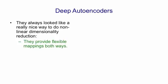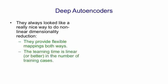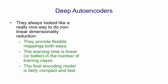They provide flexible mappings in both directions, and the mappings can be non-linear. Their learning time should be linear or better in the number of training cases, and after they've been learned, the encoding part of the network is fairly fast, because it's just a matrix multiply for each layer.